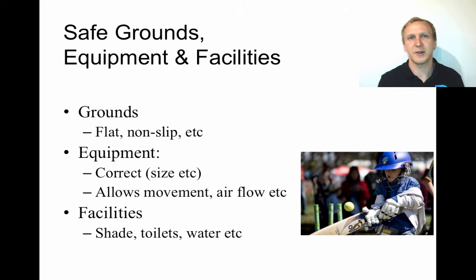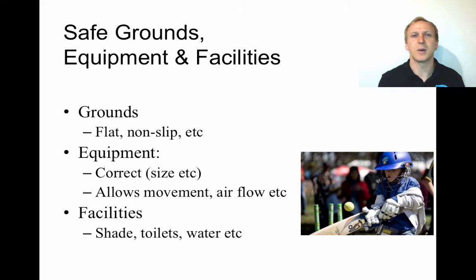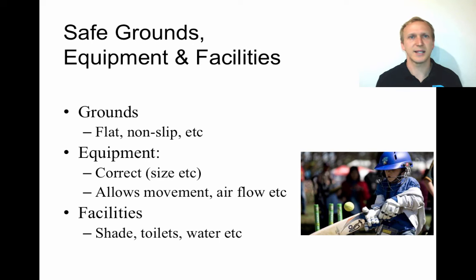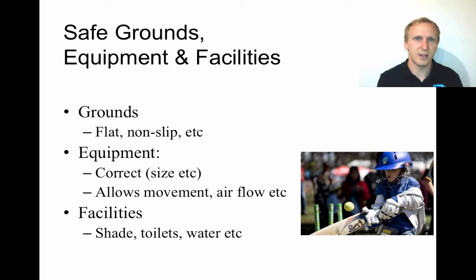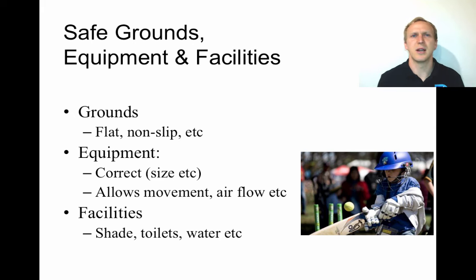Facilities include the surroundings of the grounds — grandstands, toilets, fencing. There should be shade available, particularly for extended games like cricket or AFL, to protect spectators and players waiting their turn to bat. Toilets should be functional, clean, and free of glass. There should also be water available at the facilities so that athletes can refill and stay hydrated, which promotes the well-being of the athlete.